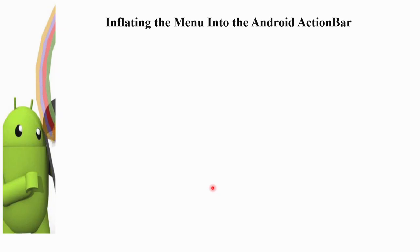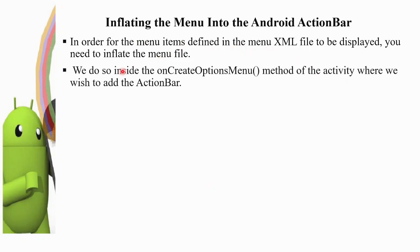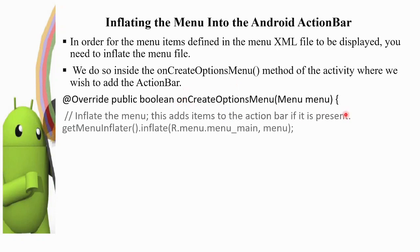Now the menu is set up correctly and we can inflate the menu into the action bar. In order for the menu items to be defined, you need to inflate the menu file. We do this inside the onCreateOptionsMenu method of the activity where we wish to add the action bar. Inside that method, we call getMenuInflater().inflate(R.menu.menu, menu) to inflate the menu object.